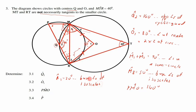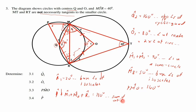Now in the full triangle, angle P + (M1 + M2) + R1 = 180° — sum of interior angles of a triangle. So P = 180° − 90° − 20° = 70°.